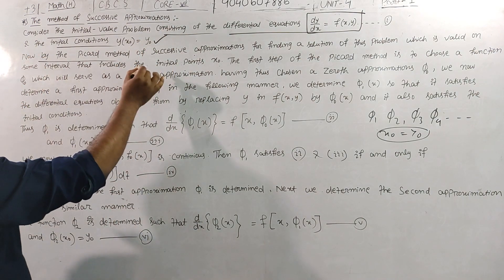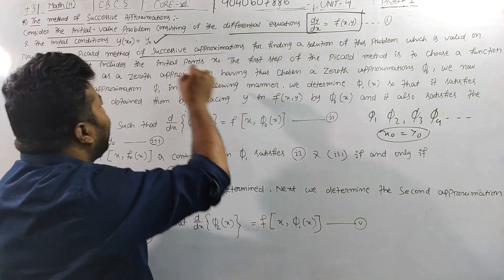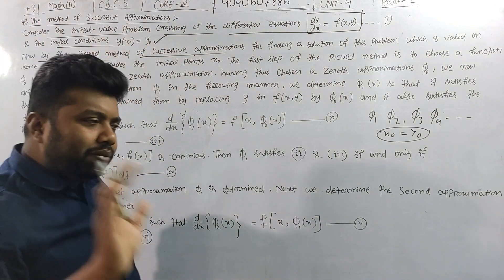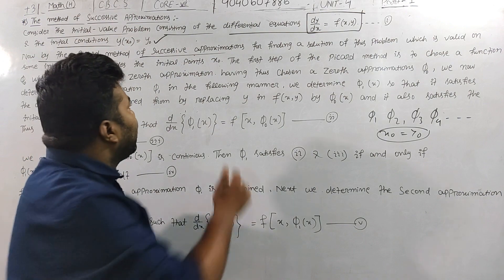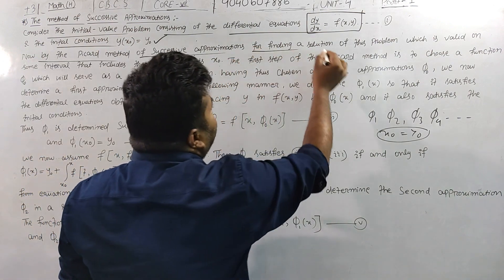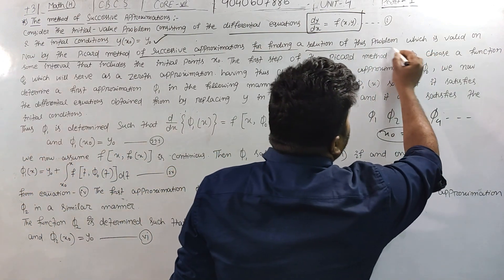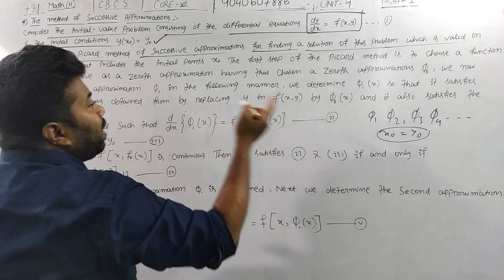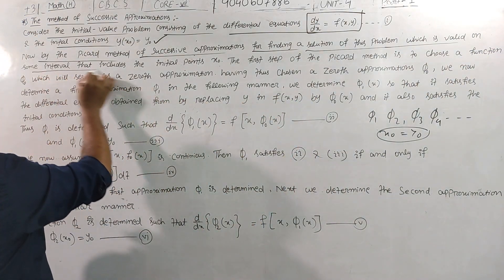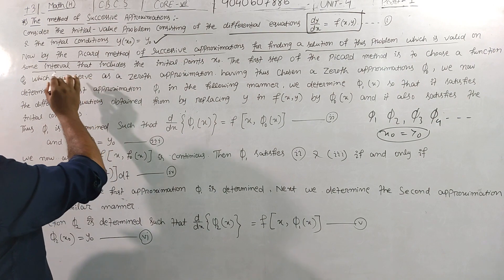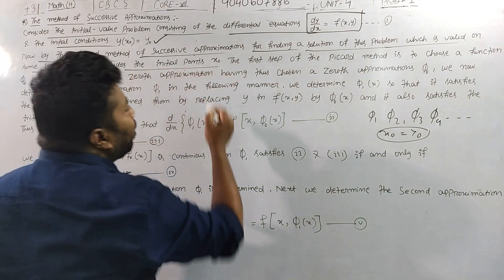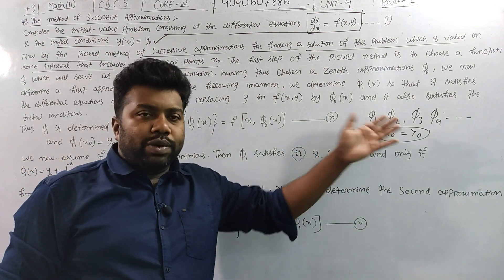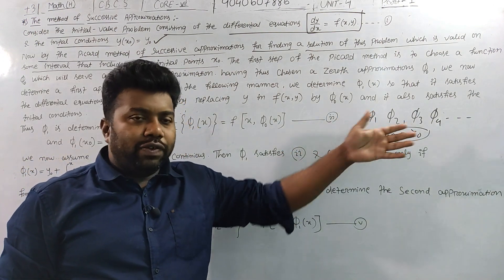By the Picard method of successive approximation, the Picard method will be used to find an approximation for the solution of this problem, which is valid on some interval that includes the initial point x0. The approximations are called φ1, φ2, φ3, φ4.